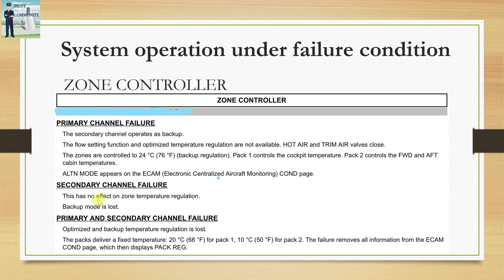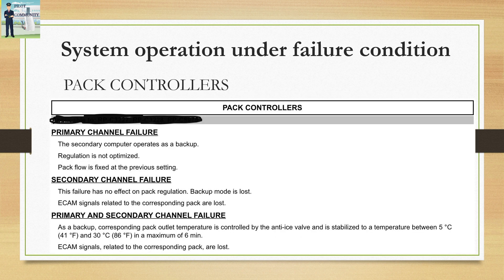If the secondary channel fails, it has no effect on zone temperature regulation but the backup mode is lost. When both primary and secondary channels fail, optimized and backup temperature regulation are lost. The packs deliver a fixed temperature — 20 degrees centigrade for pack 1 (cockpit) and 10 degrees centigrade for pack 2 (cabin). The failure removes all information from the ECAM condition page and displays 'PACK REGULATION'.